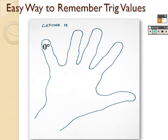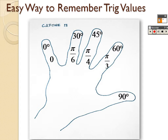To find trig values, hold up your left hand. The pinky finger is your 0 degree finger. The ring finger is your 30 degree finger. Your middle finger is your 45 degree finger. Your pointer finger is your 60 degree finger. And your thumb is your 90 degree finger. You also need to know these in radians: 0 stays 0, 30 degrees is π/6, 45 degrees is π/4, 60 degrees is π/3, and 90 degrees is π/2.